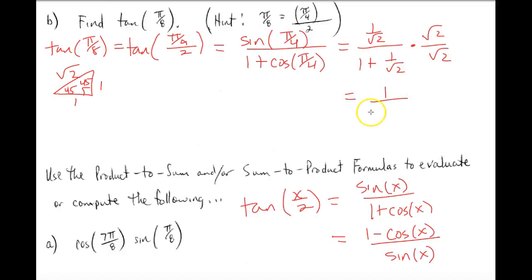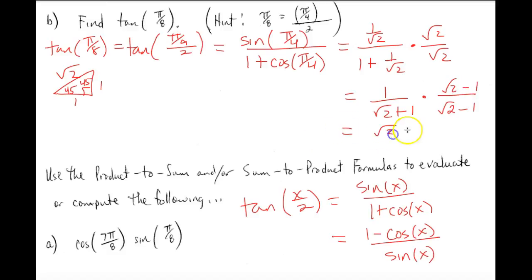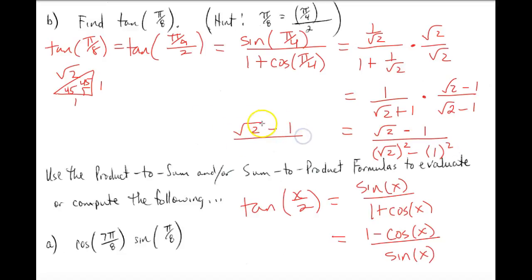In the numerator, multiplying by √2 gives 1. In the denominator, that gives √2 plus 1. To further rationalize, we multiply by the conjugate (√2 minus 1) over (√2 minus 1). The numerator becomes √2 minus 1, and the denominator becomes √2 squared minus 1 squared, which is 2 minus 1 equals 1. So the final answer is √2 minus 1.